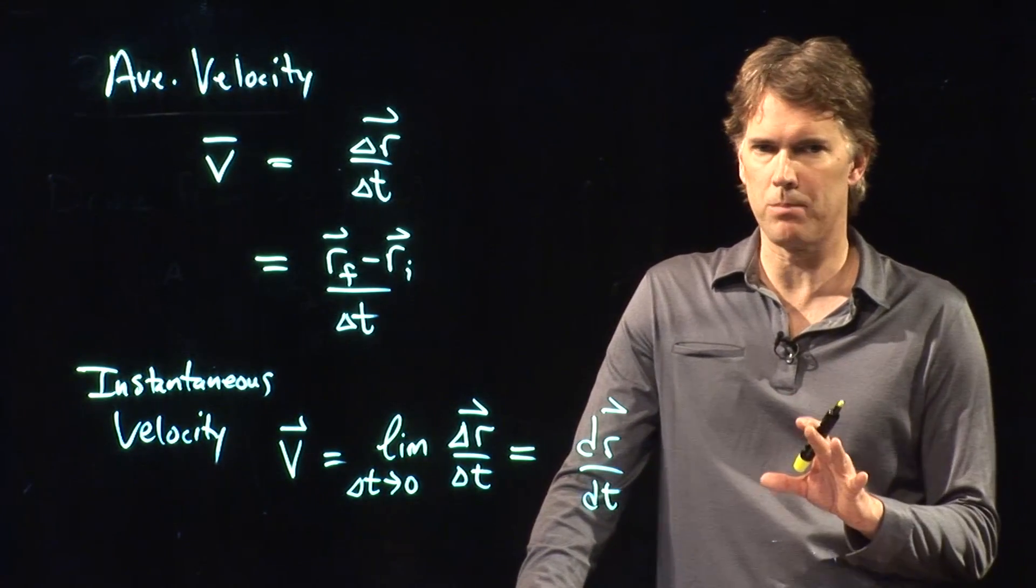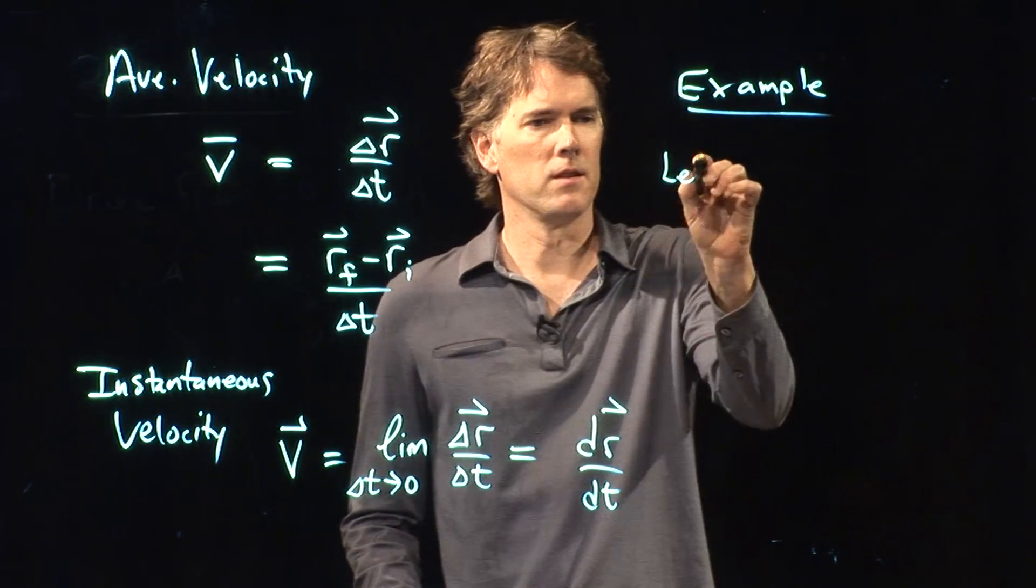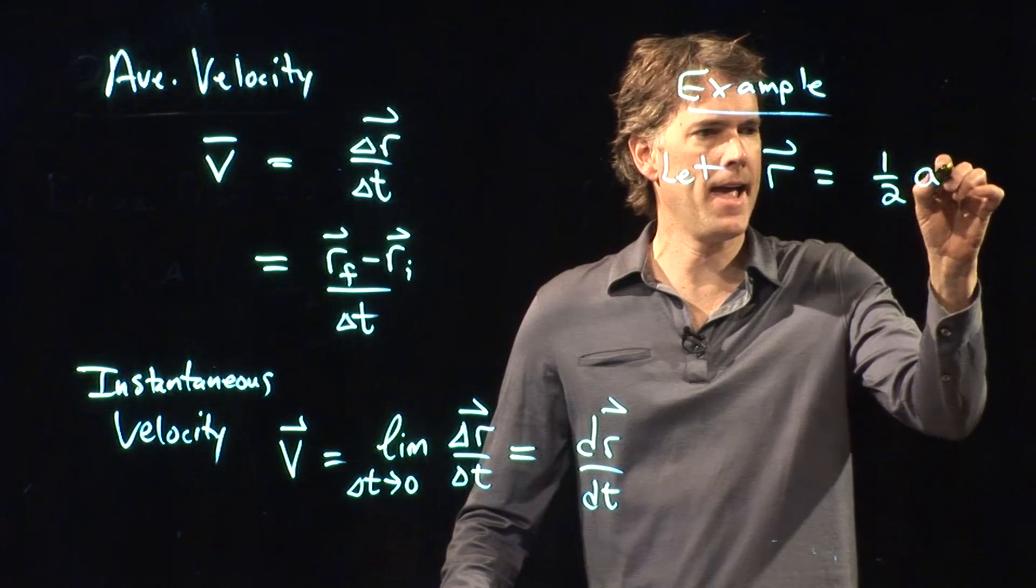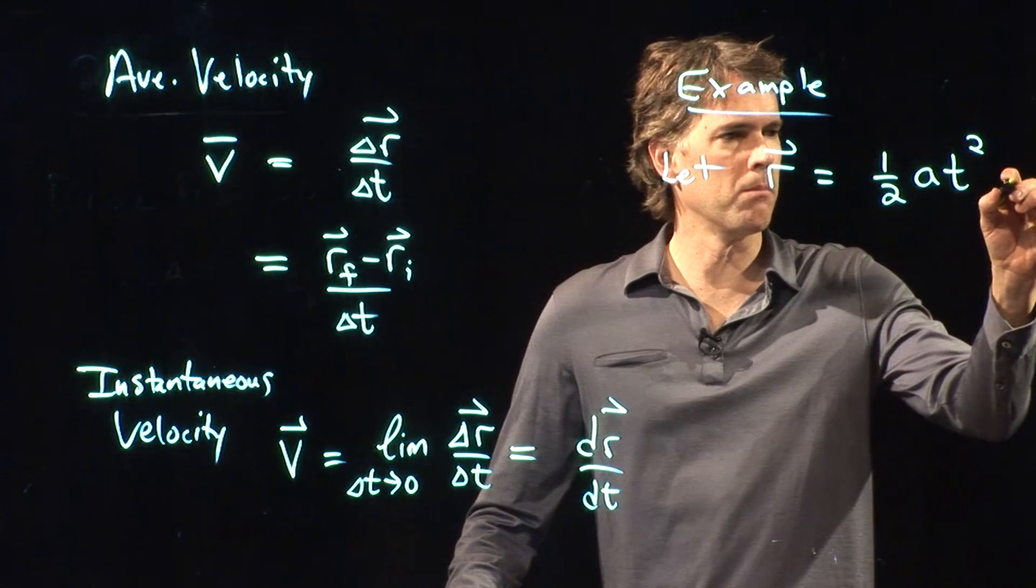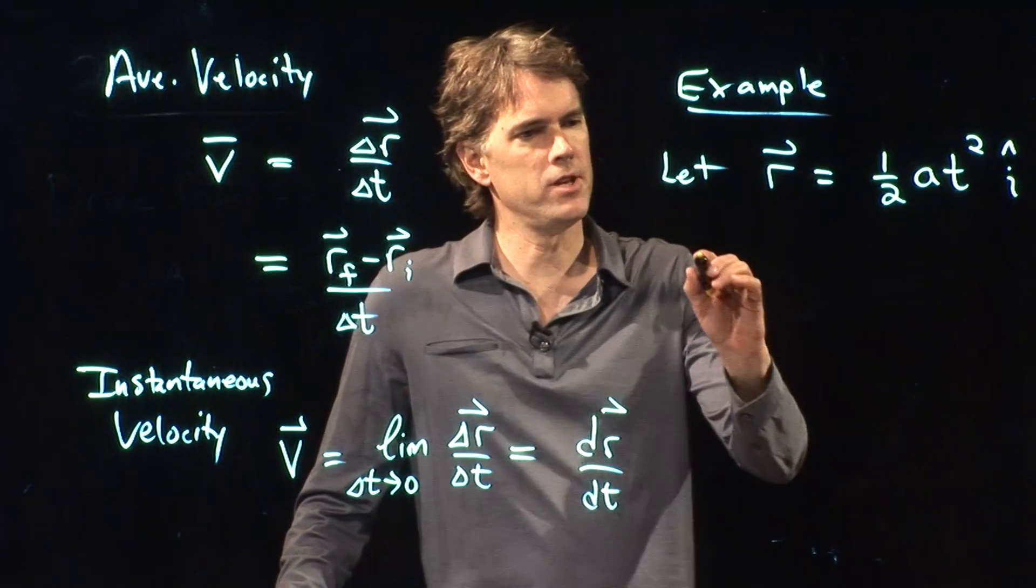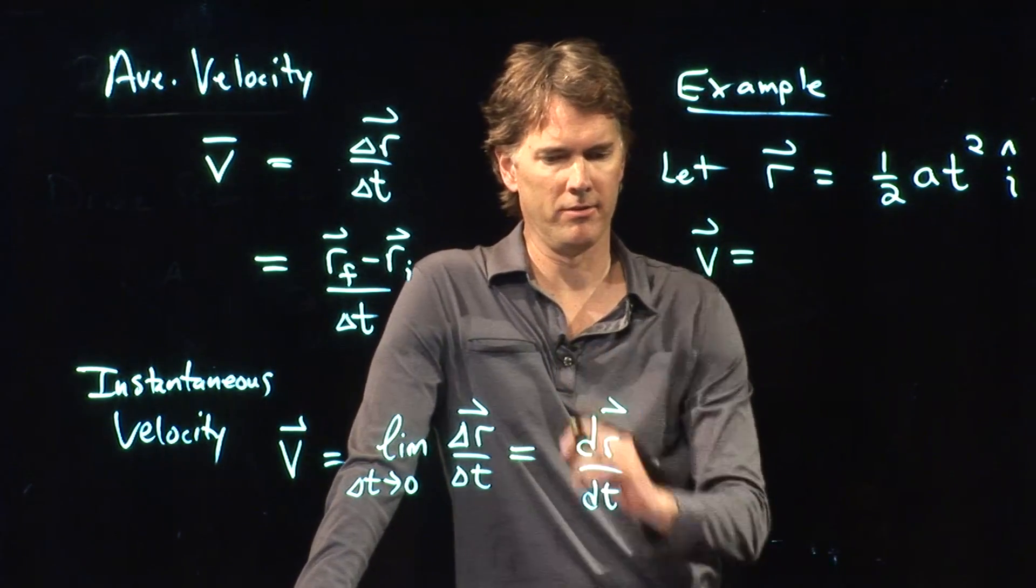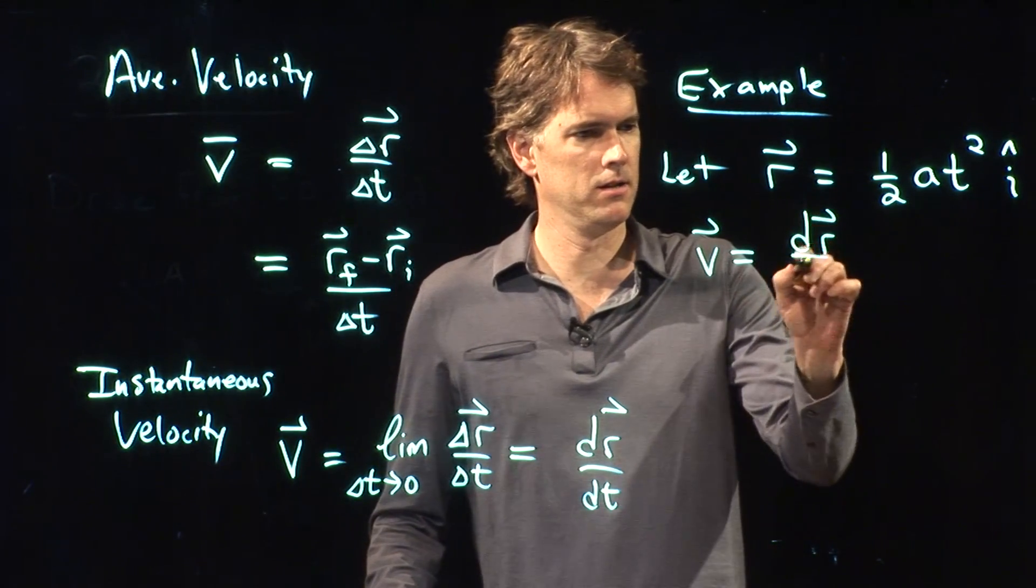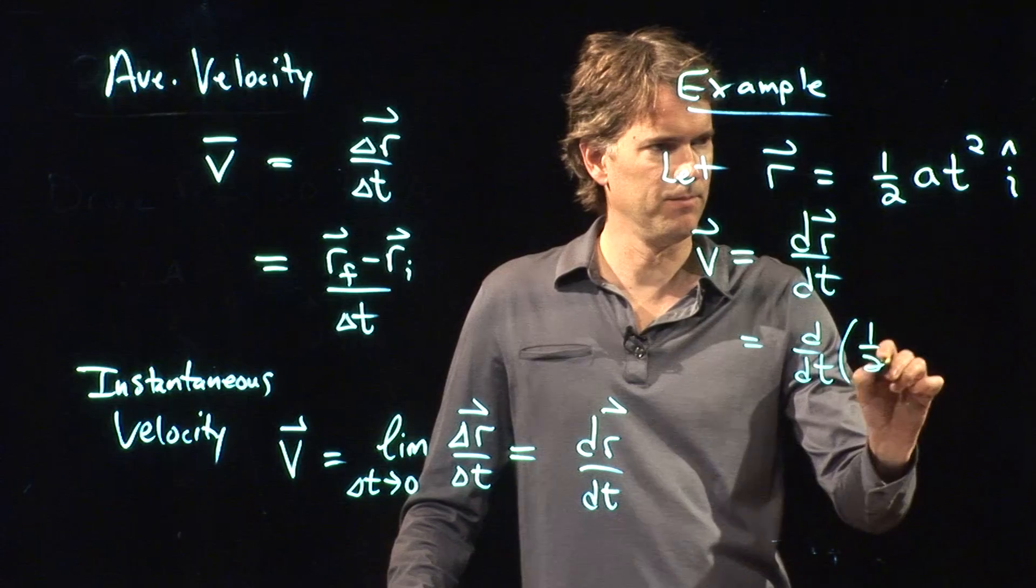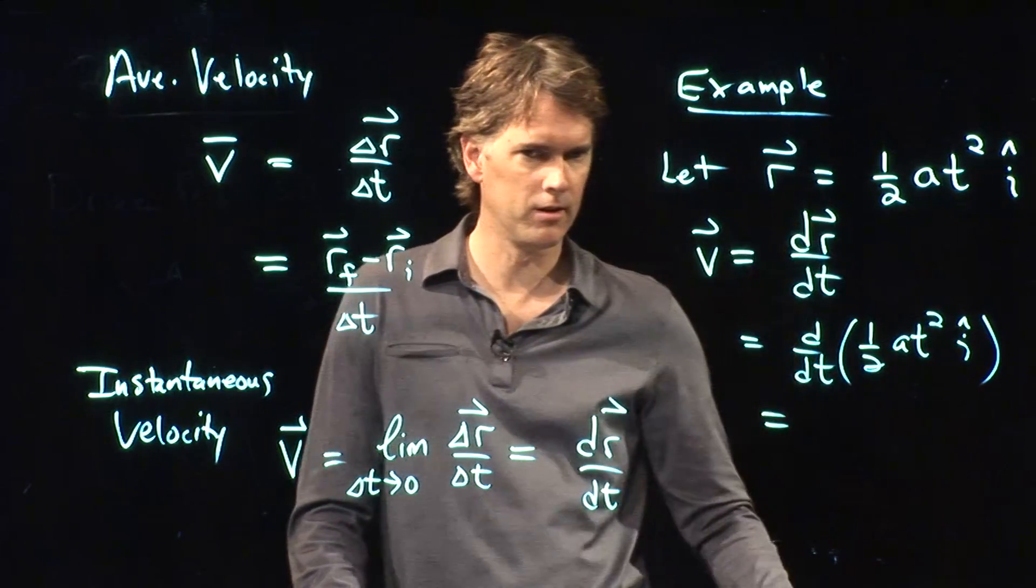All right. Maybe we should try an example of that. Let's say that we have the following: R is equal to one-half AT squared, and we are moving in one dimension, I hat. What is V? Well, we just have to take a derivative. So V is going to be dr dt, which is d dt, the derivative of one-half AT squared, I hat.